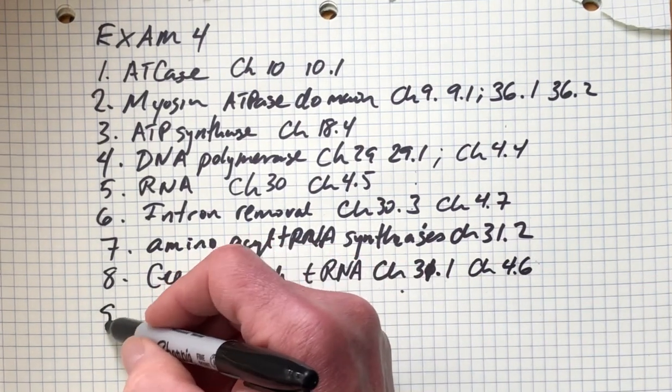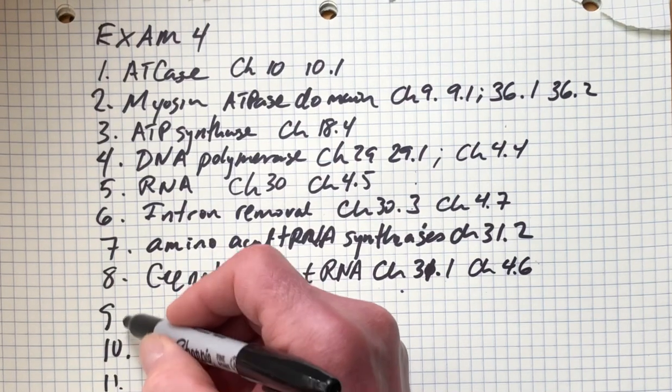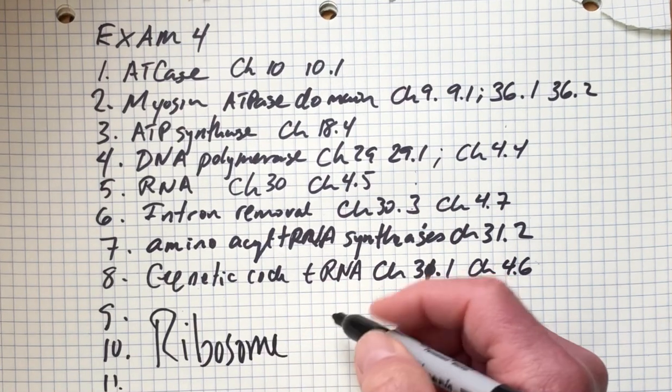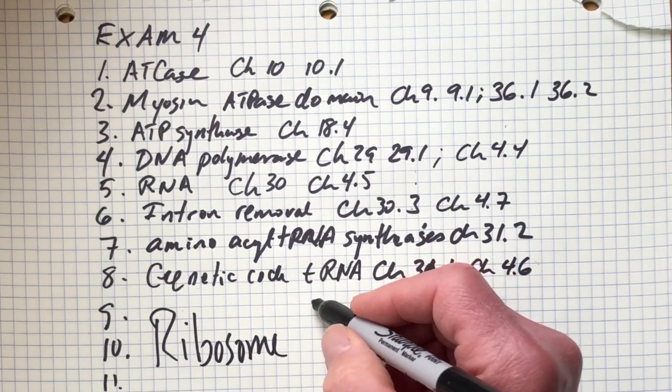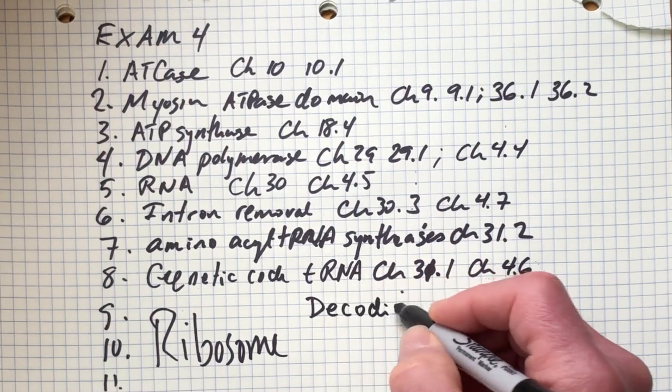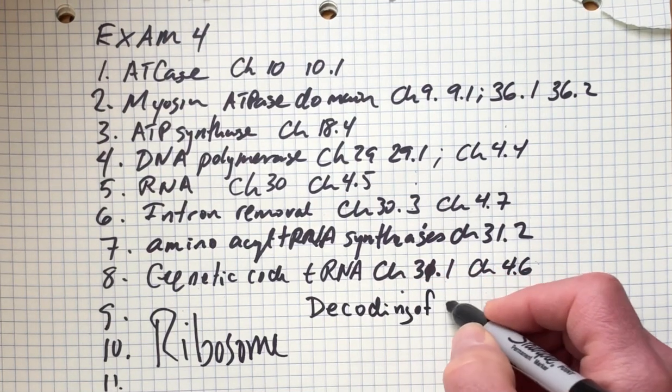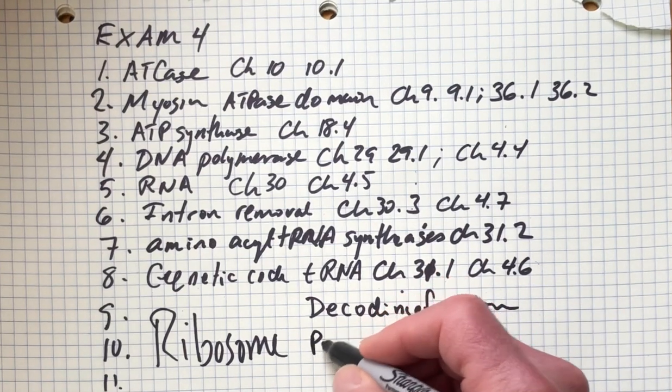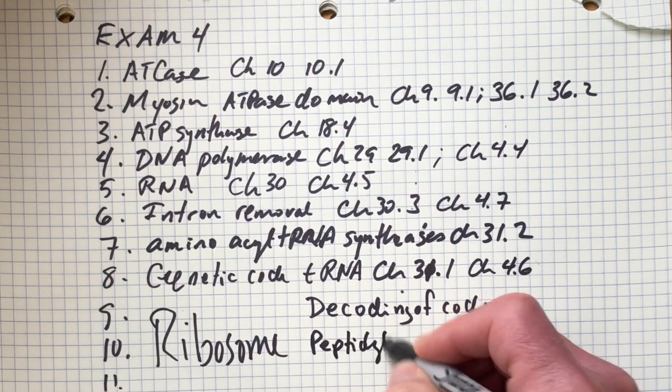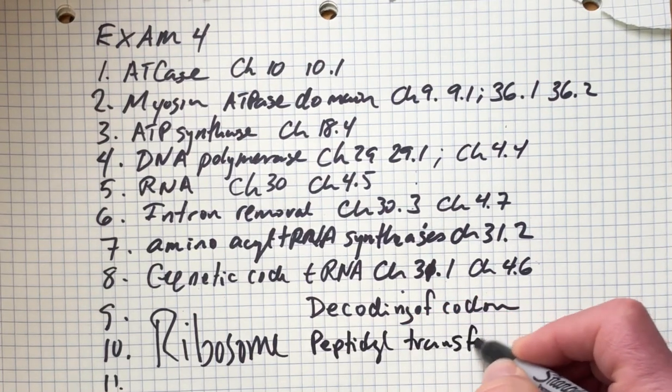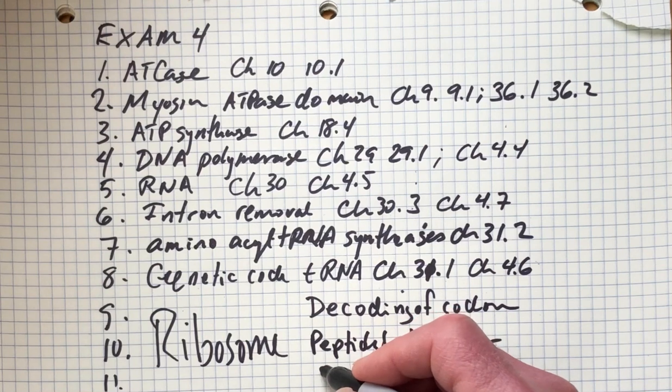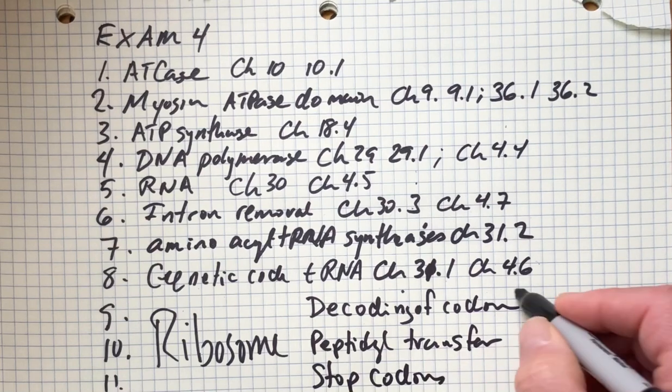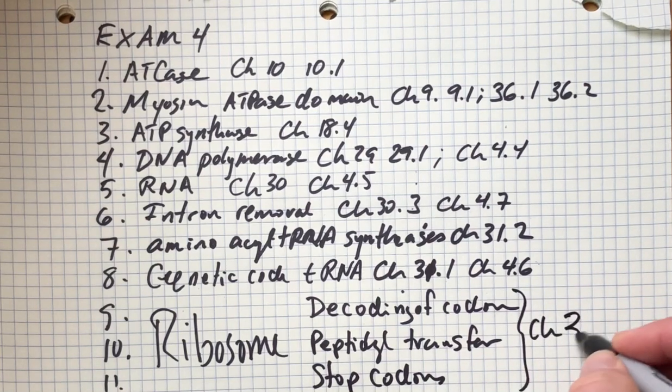Next, 9, 10, 11. All of these topics have to do with the ribosome. I've broken that down into three parts. One, the first being decoding of codons. Next, chemistry of the peptidyl transfer reaction. And then, how are stop codons treated? Final topic. All of this can be found in chapter 31.3.